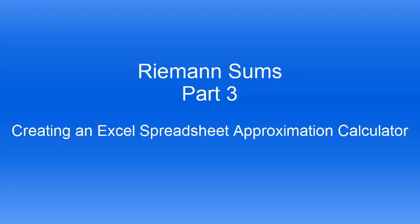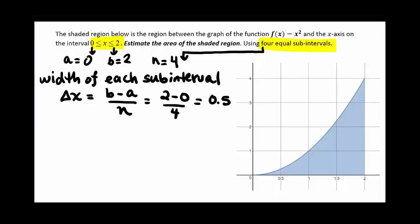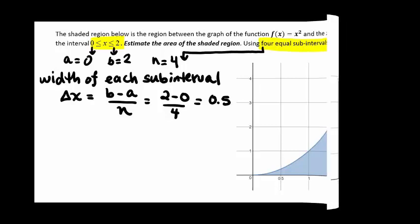In the third part of this video series, we're going to be creating an Excel spreadsheet to do all of our approximations for us. We're going to use the same function x squared from 0 to 2 with 4 subintervals.